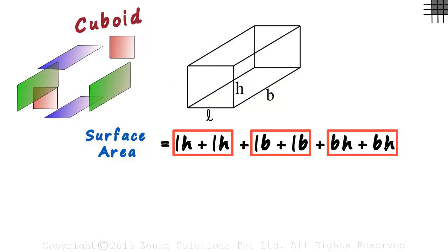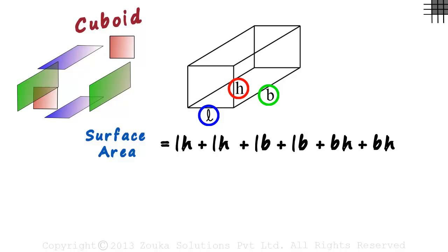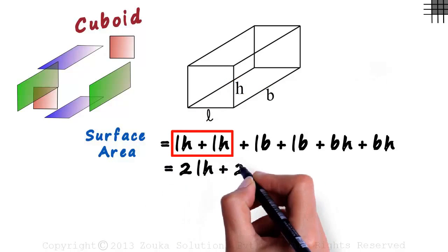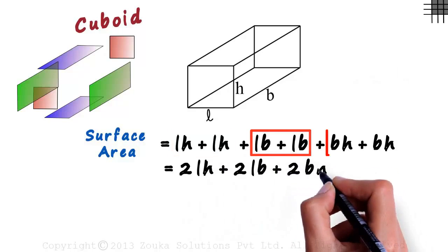Look at each group. This will be 2LH, this will be 2LB, and this will be 2BH. So for a cuboid with L, B, and H as dimensions, the surface area will equal 2LH plus 2LB plus 2BH.